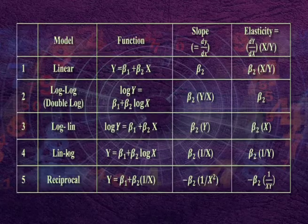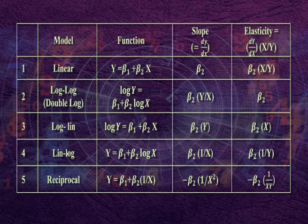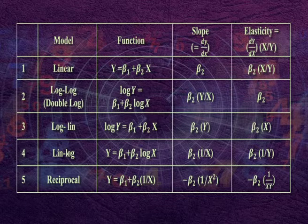The shown tabular form gives in a nutshell the broad categories of the above models. Here you can see in column one: model linear, log-log which is also called double log, then log-lin, lin-log, and reciprocal.